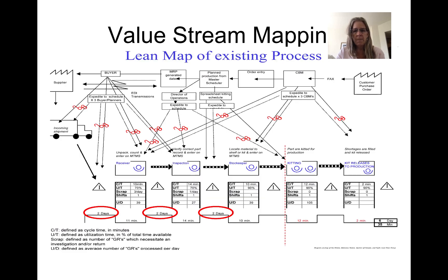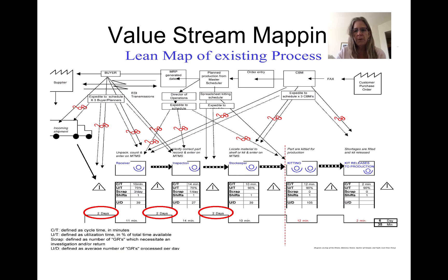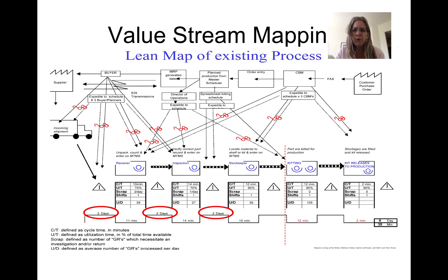The last item is a value stream map, which you're familiar with from IME 223. It's a complex chart that shows many pieces of information: time, information flow, physical travel, and the different people involved in the process. It can range in various levels of complexity. I hope this gives you an overview of the various kinds of charts and diagrams you can use in industrial engineering analysis.